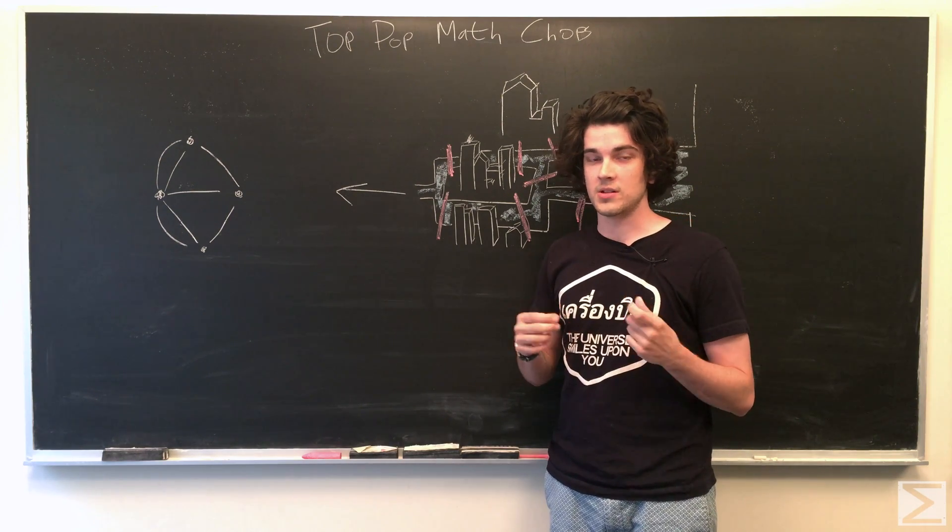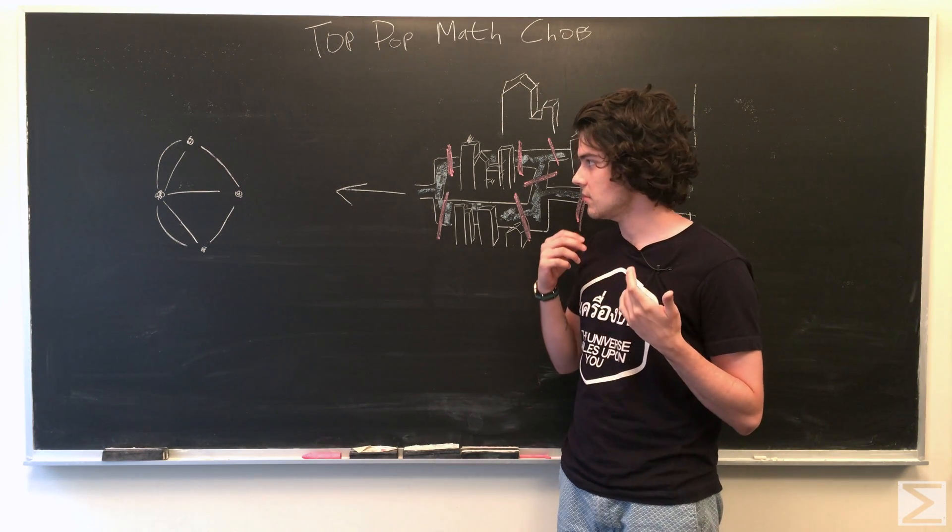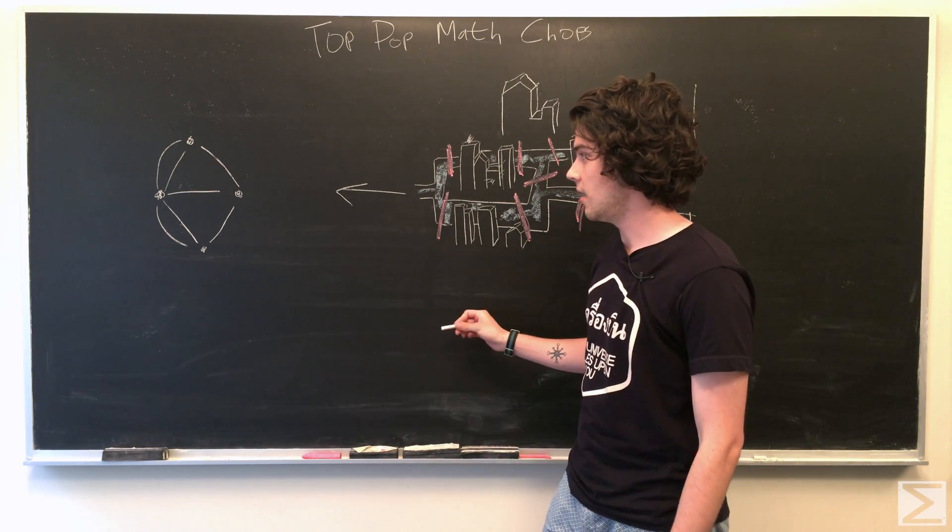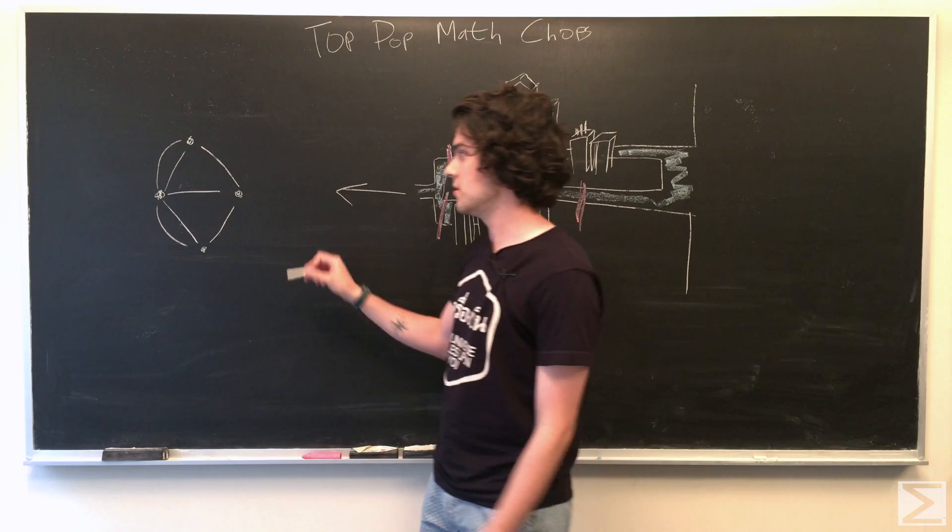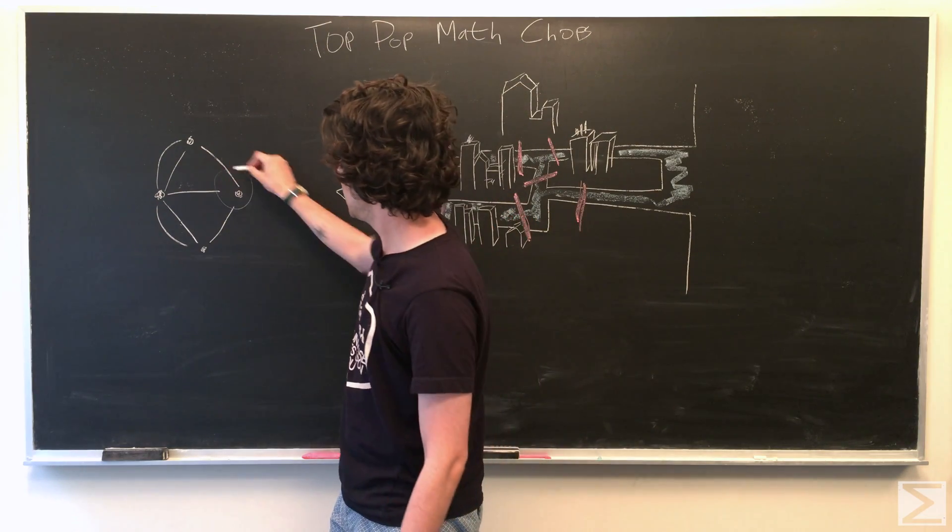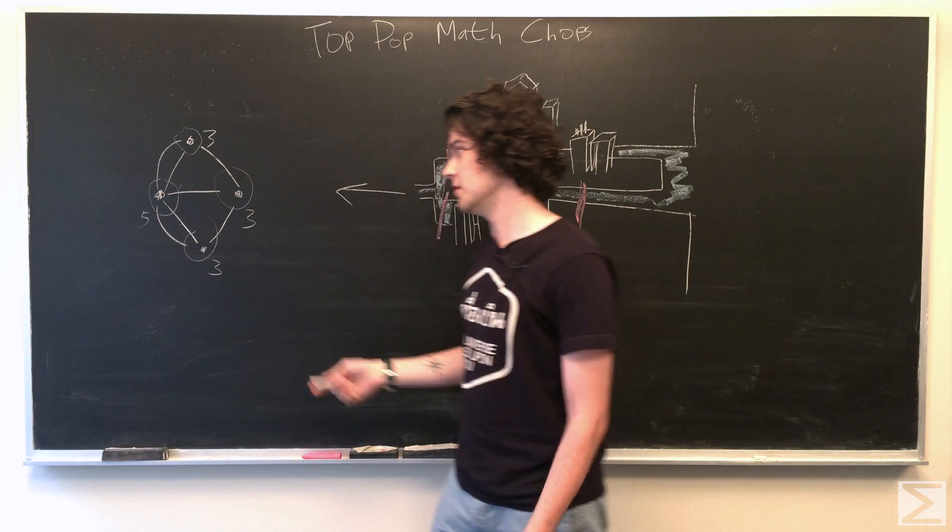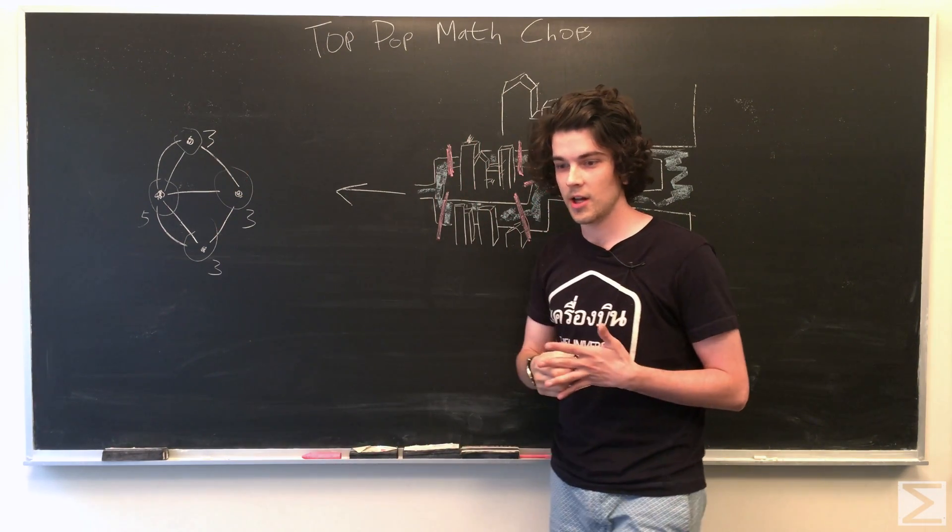Any other vertex has to have an even degree. This was Euler's observation, and he immediately observed that all of these vertices have odd degree, so it's impossible.